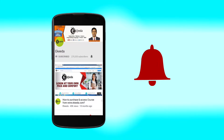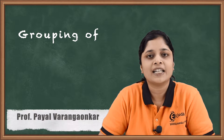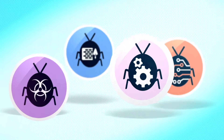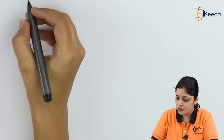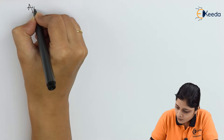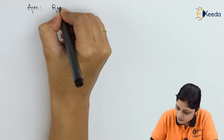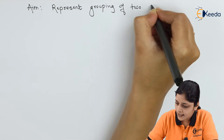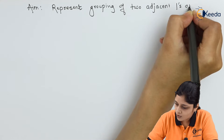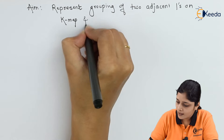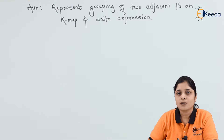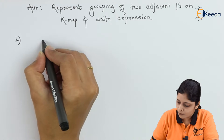Hello friends, now we are going to see the grouping of two adjacent ones on K-map. In this video, our aim is to represent grouping of two adjacent ones on K-map and write the expression.